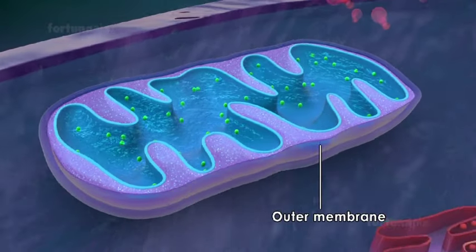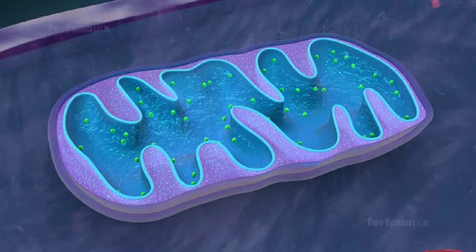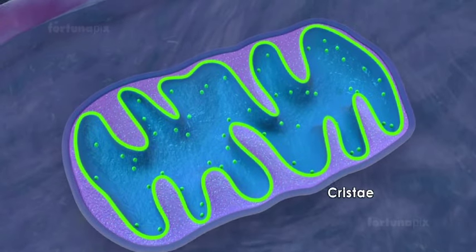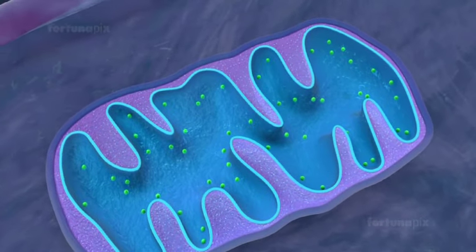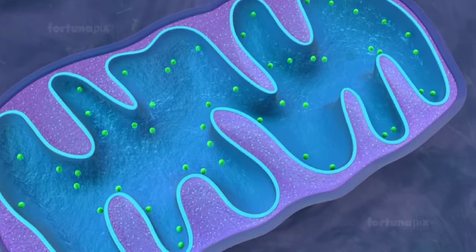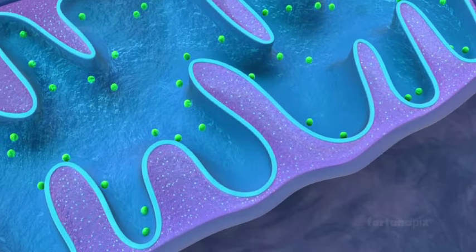The outer membrane is smooth while the inner membrane has many inward folds called cristae. The folds increase the surface area and are the working surfaces for mitochondrial reactions.